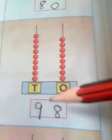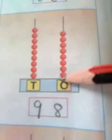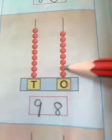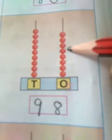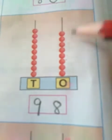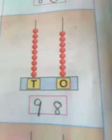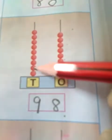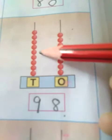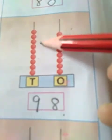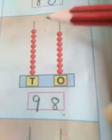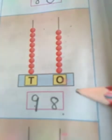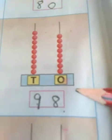Next, we can count again: 1, 2, 3, 4, 5, 6, 7, 8. Eight beads are there, so we can write here 8. In the 10's place: 1, 2, 3, 4, 5, 6, 7, 8, 9. Nine is there, so we can write here 9. So 9 and 8 — ninety-eight.